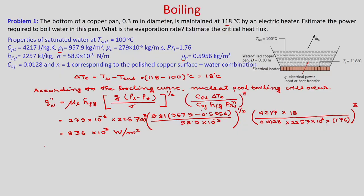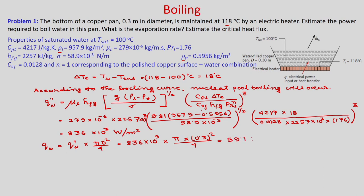Now we need to calculate the power required. Power equals heat flux times the heat transfer area, which is the bottom of the pan: pi d squared by 4. So Q_W equals Q double prime W times pi d squared by 4, which is 836 times 10 to the power 3 times pi times 0.3 squared divided by 4, giving approximately 59.1 kilowatt.